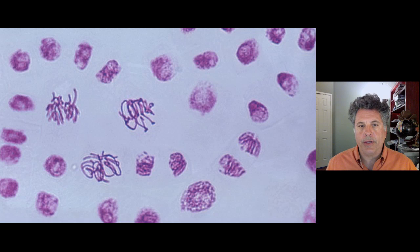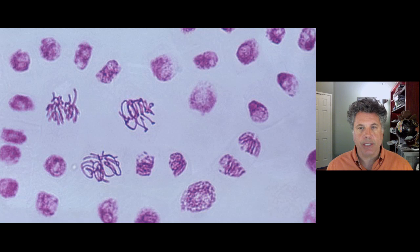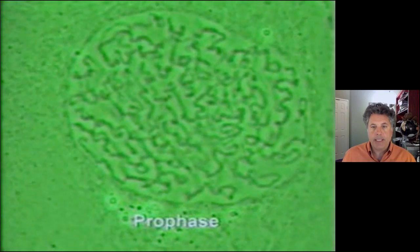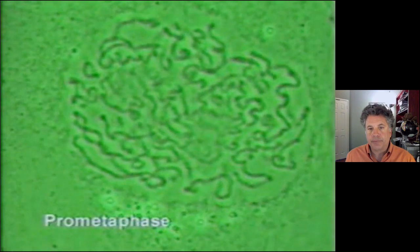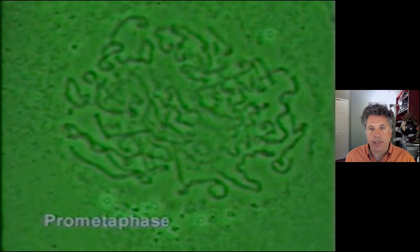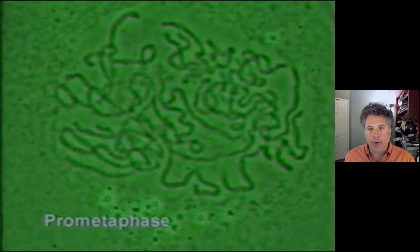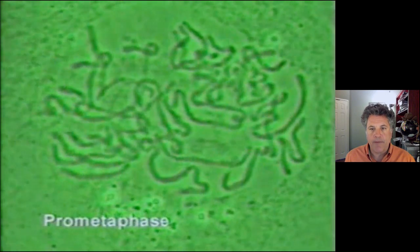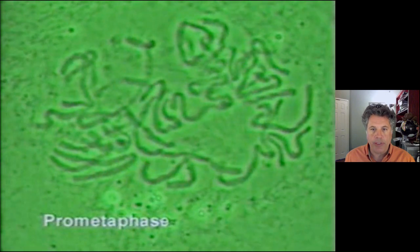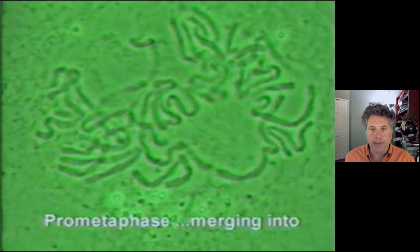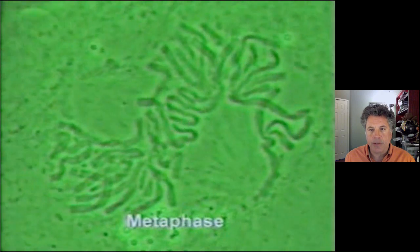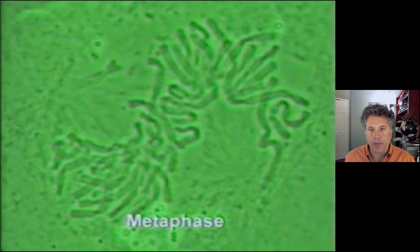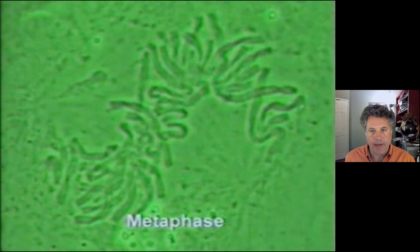Let's start with an overview of mitosis looking at the movement of chromosomes in a newt lung cell preparation. We see that condensation of chromosomes progresses at prophase. By prometaphase, the nuclear envelope has dissolved and chromosomes are put under tension as they connect to microtubules of the spindle apparatus. That attachment of kinetochores to microtubules is moving the chromosomes to the middle of the cell during metaphase.